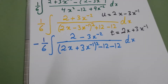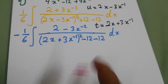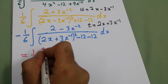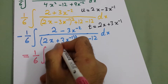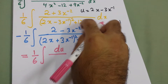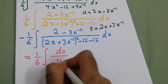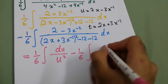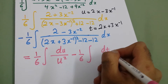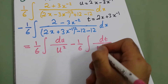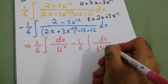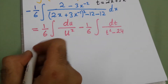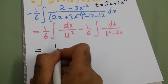So our integral now becomes 1 over 6 times the integral of du over (u² minus something), minus 1 over 6 times the integral of dt over (t² minus 24). Now these are easy standard integrals.